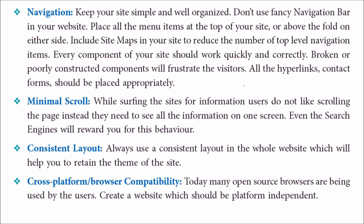Navigation means that when a user comes to a website, they should get links that allow them to visit various other pages and come back. You have to organize your pages in such a way that you don't frustrate the visitor. Hyperlinks should be active and must point to the pages you want users to reach. Scrolling should be minimal — a very long page nobody is going to read. Every page should have a consistent layout, and the website must cater to various browsers and cross-platforms like macOS and Windows.